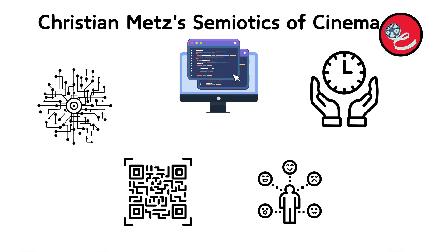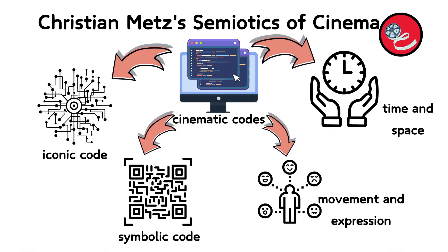Metz identified several key cinematic codes, including the iconic code — images on screen that resemble their real-world counterparts — the symbolic code of conventional signs that need to be learned, like the language of editing, and codes of movement and expression. His analysis extends to the ways films manipulate time and space, creating a diegesis, or filmic world, which audiences come to accept as real within the context of viewing.